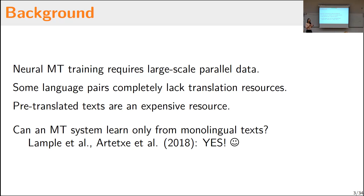It's always possible to try to collect some translations for any language pair, but especially for languages very distant from English or spoken by small communities, it is difficult. The annotations are very expensive. That's why in 2018, this field of unsupervised MT sort of started when two authors showed that it's actually possible to train MT only on monolingual text. Later on, other researchers pointed out limitations because it doesn't always work, but the initial idea was presented in 2018.